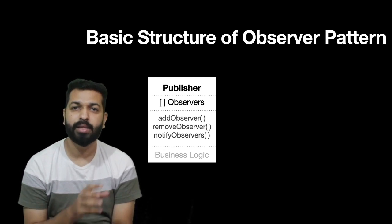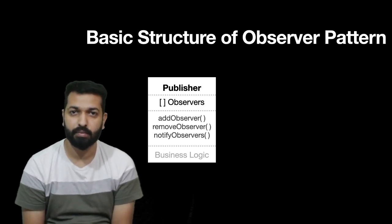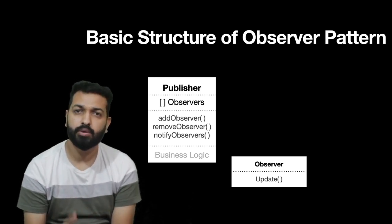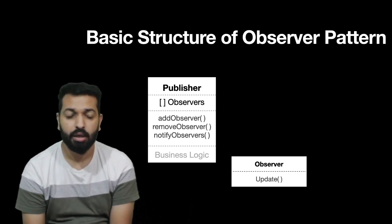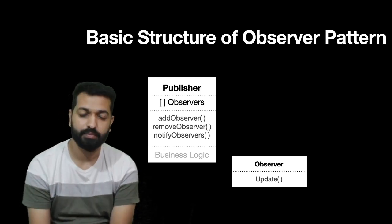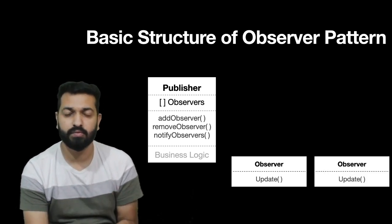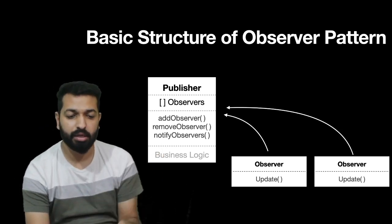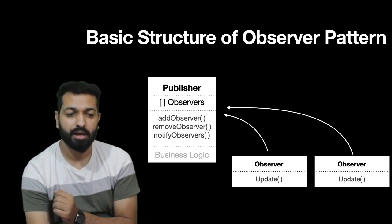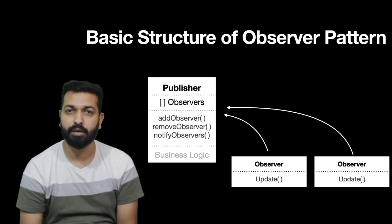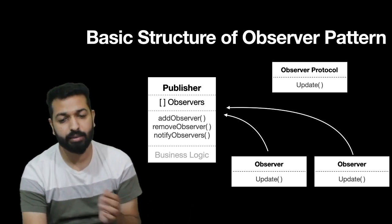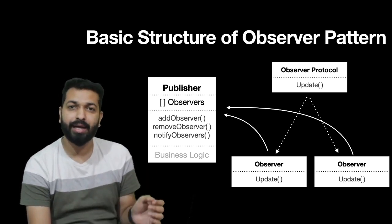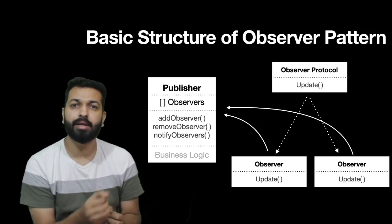The third part of the publisher is business logic — the code that determines when the event is triggered. The second component is the observer: any entity interested in the publisher's events. The observer should have an update method that the publisher calls when the event takes place. Because the publisher has an array of observers, there can be multiple observers. They use addObserver to subscribe, and when the event takes place, the publisher calls notifyObserver which calls the update method on each observer. But how will the publisher know observers have an update method? This is where a protocol comes in — a protocol confirmed by all observers that guarantees the update method exists.